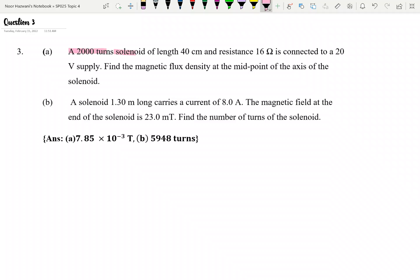A 2,000 turns solenoid of length 40 cm and resistance 16 ohm is connected to a 20 volt supply. Find the magnetic flux density. So magnetic flux density is actually another name for magnetic field.